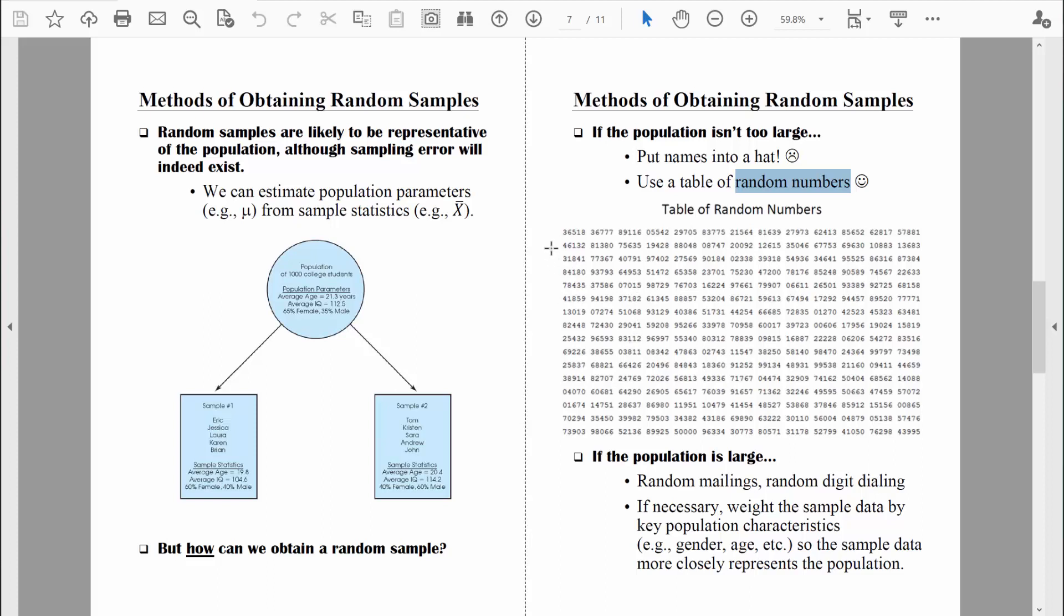They look a lot like this, what you see right here. You can find tables of random numbers online. There are entire books of random numbers. So the question is, how do we use a table of random numbers to select a random sample?